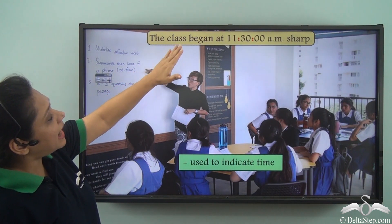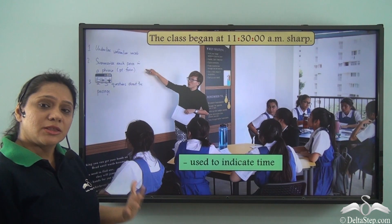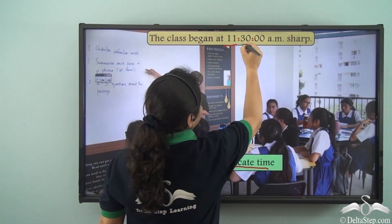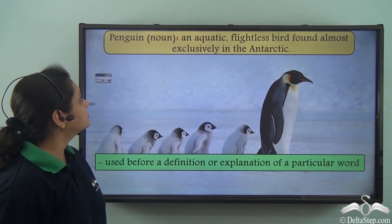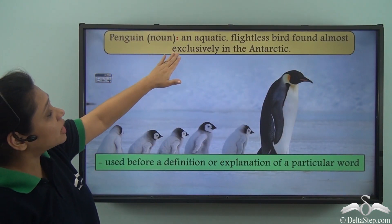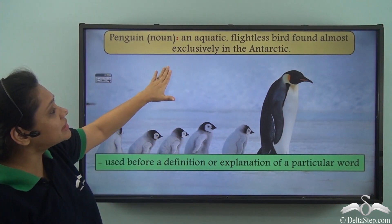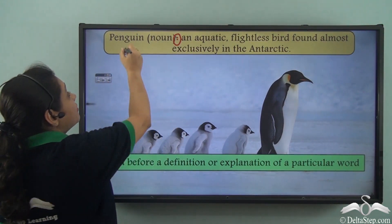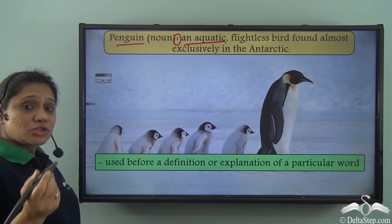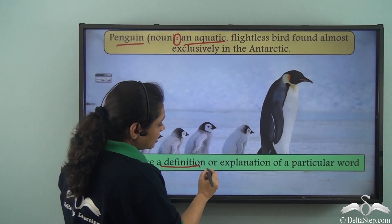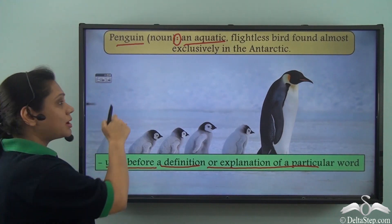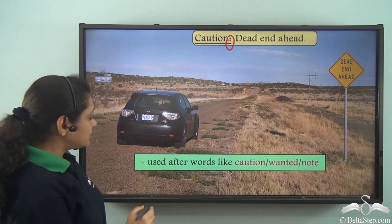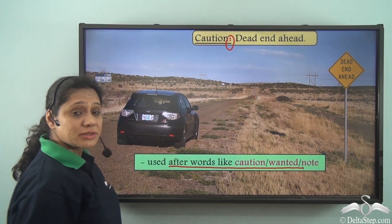A colon is used to indicate time — for example, 'The class began at 11:30 am sharp' — separating hours, minutes and seconds. A colon is also used to separate a word from its meaning or explanation, as in: 'Penguin. Noun: An aquatic flightless bird found almost exclusively in the Antarctic.' Furthermore, a colon is used after words like 'caution,' 'wanted,' or 'note,' such as 'Caution: Dead end ahead.'